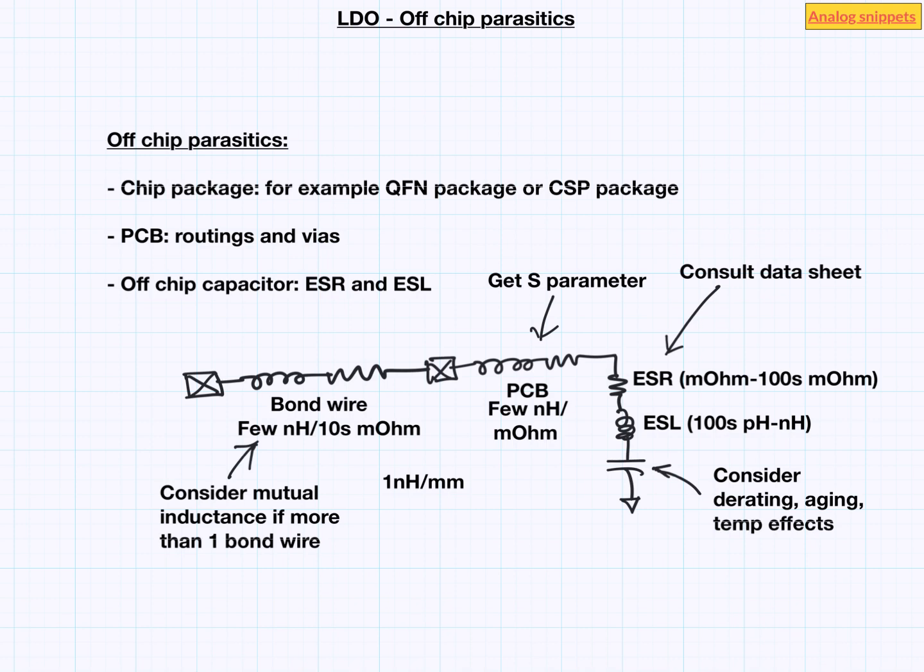Which of these three is dominant effect? It depends on the package type, the PCB design and the capacitor used. For example, if you use CSP package rather than QFN package, then CSP package does not have any bond wires. CSP package uses balls to connect to the PCB. And inductance of a ball is typically tens to hundreds of picohenry. So in that case you can practically ignore this component of the parasitic.